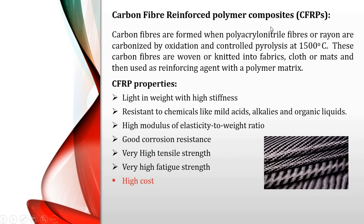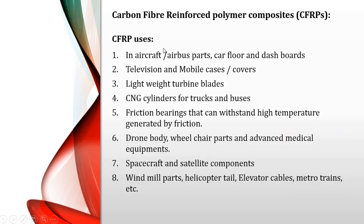Carbon fiber reinforced polymer composites are made from polyacrylonitrile or rayon fibers that are carbonized by oxidation under controlled pyrolysis at 1500°C. The resulting black carbon fibers are woven into cloth, knitted into fabric or mat, and then embedded in the polymer matrix. Unlike glass FRP, CFRP does not have a low coefficient of thermal expansion problem. They are light in weight with high stiffness, high modulus of elasticity to weight ratio, corrosion resistance, high tensile strength, and fatigue strength.